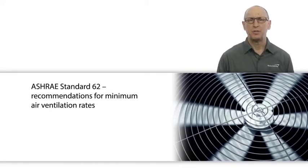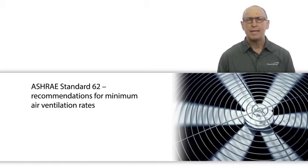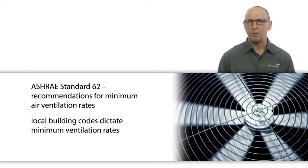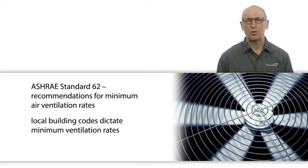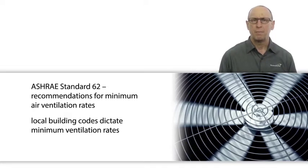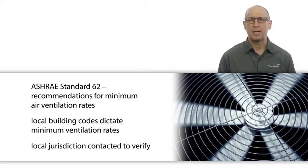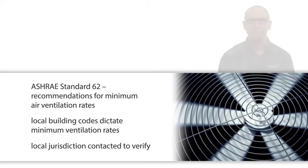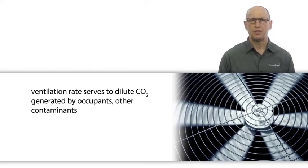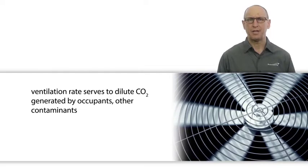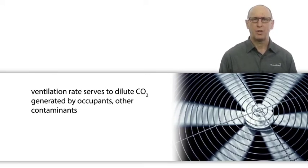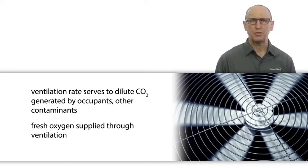ASHRAE Standard 62 provides recommendations for minimum air ventilation rates per person in occupied spaces. In addition, local building codes may dictate minimum ventilation rates for commercial buildings and work environments. The building departments in the local jurisdiction should be contacted to verify this. The ventilation rate serves to dilute any carbon dioxide in the space generated by the occupants, as well as other contaminants that might be generated in the space. Fresh oxygen is also supplied for the occupants through fresh air ventilation.